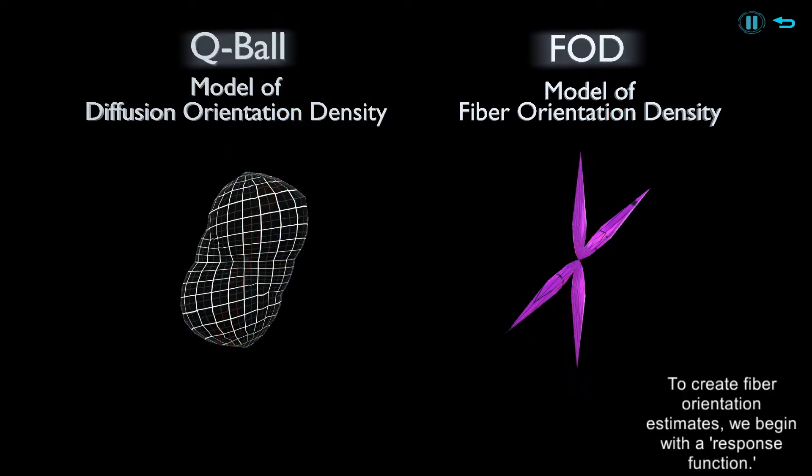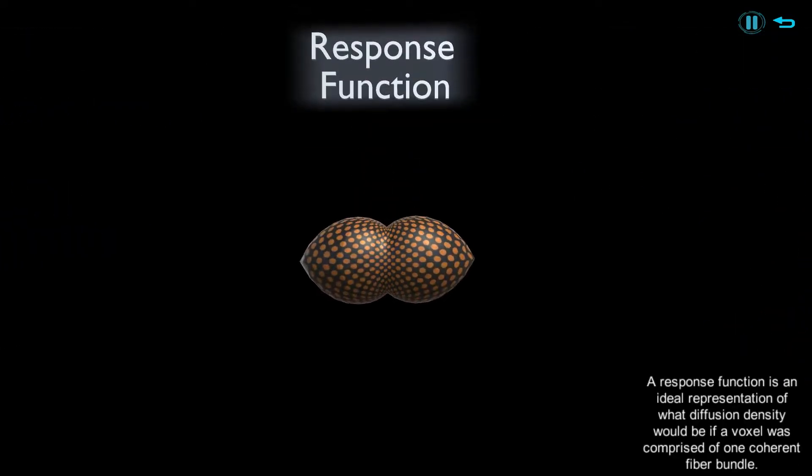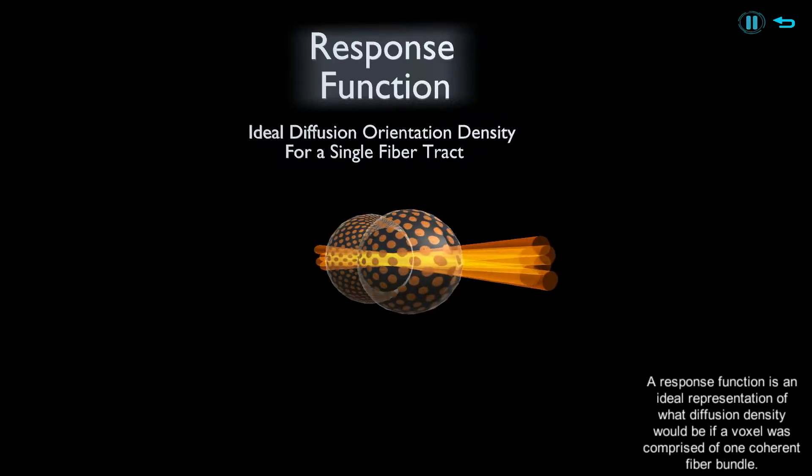To create fiber orientation estimates, we begin with a response function. The response function is an ideal representation of what diffusion density would be if a voxel was comprised of one coherent fiber bundle.